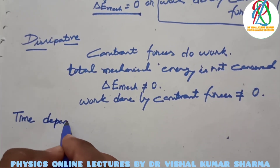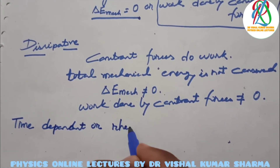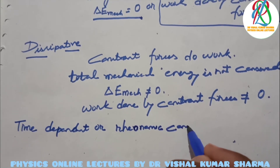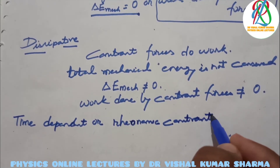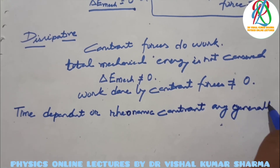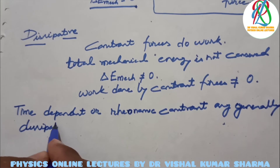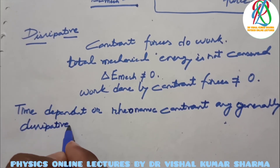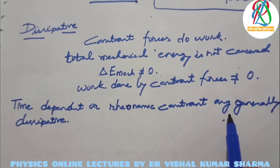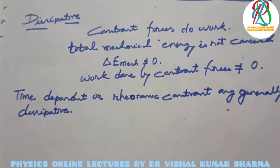An important point: time-dependent or rheonomic constraints are generally dissipative in nature. So rheonomic constraints are generally classified as dissipative constraints.